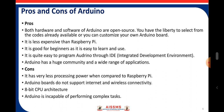For Arduino, both hardware and software are open source. You have the liberty to select from cores already available or customize your own Arduino board. It is less expensive than Raspberry Pi, good for beginners, and quite easy to program through the IDE using C and C++. Arduino has a huge community and wide range of applications. However, its cons include very limited processing power, no internet or wireless connectivity support, an 8-bit CPU architecture, and it is not capable of performing complex tasks.